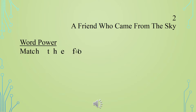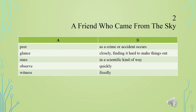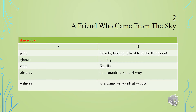Word Power: Match the following ways of looking with their meaning. Answer: Peer — Closely, finding it hard to make things out. Glance — Quickly. Stare — Fixedly. Observe — In a scientific kind of way. Witness — As a crime or accident occurs.